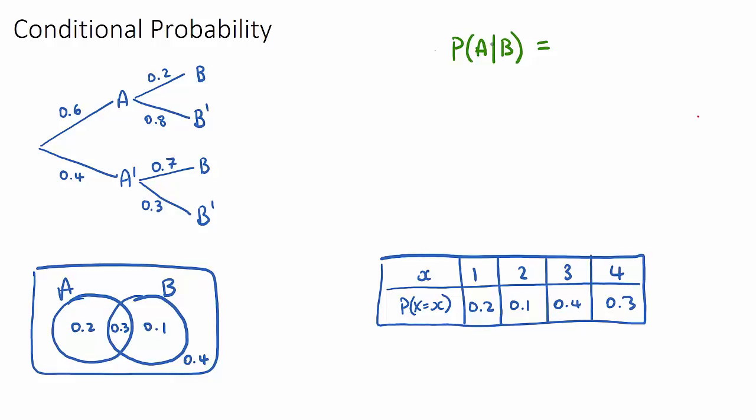This is going to be the intersection of the two, so it's the probability of A and B happening, divided by the given that event, so it'll be the probability of the second one here, the probability of B.